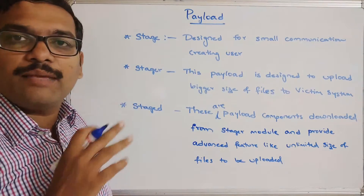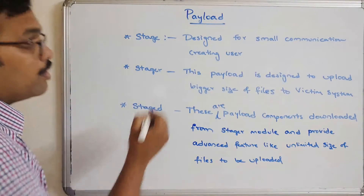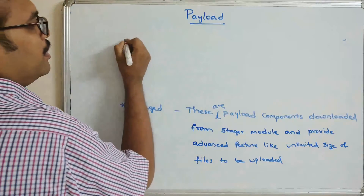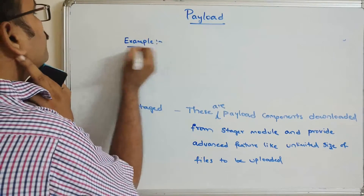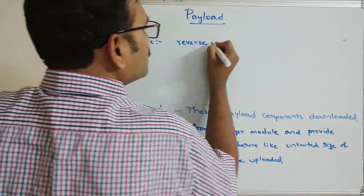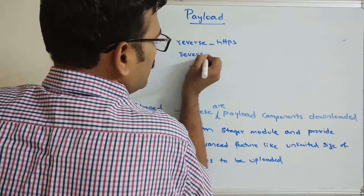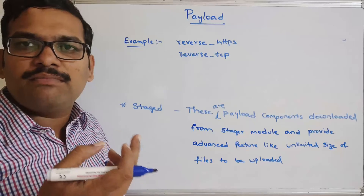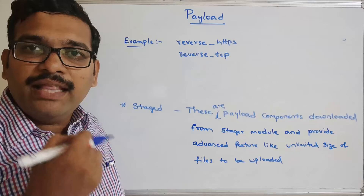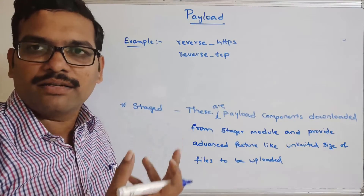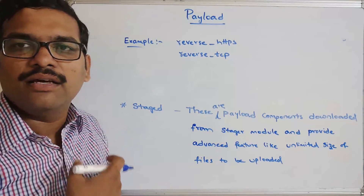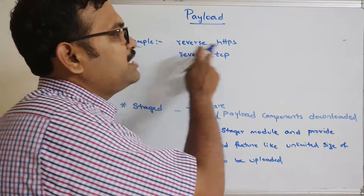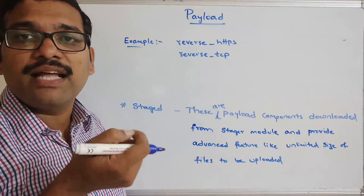A common example of payloads is reverse_https or reverse_tcp. These two payloads establish a reverse connection between the victim system and the attacker or hacker. In order to gain access to data on a victim system, there must be a connection between the victim system and the attacker. That reverse connection is established by executing these payloads — reverse_https or reverse_tcp. This is a simple example of a payload.